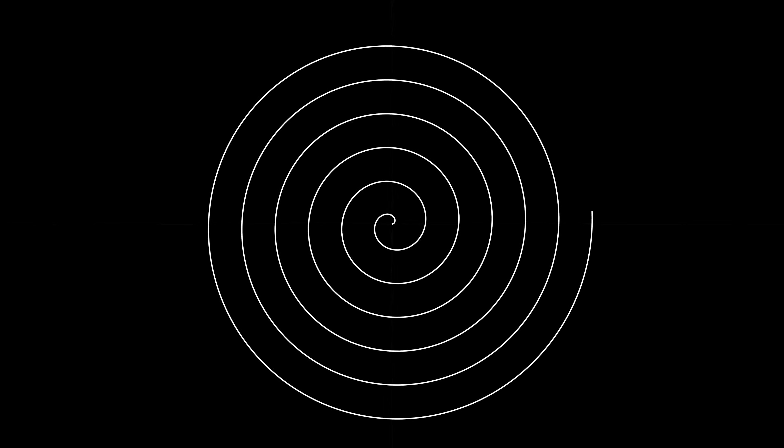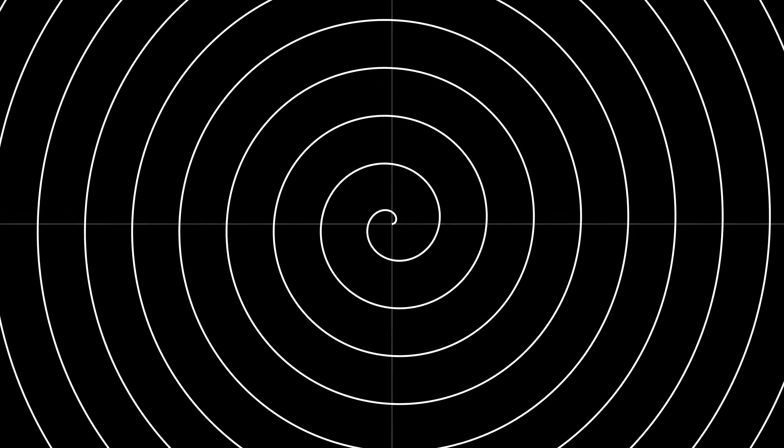You cannot construct the Archimedean spiral using straight edge and compass, however if we add the spiral as one of our tools we may be able to use this tool along with the straight edge and compass to trisect the angle. We won't actually need the entire Archimedean spiral to do this, just the bit that lies between zero and two pi.